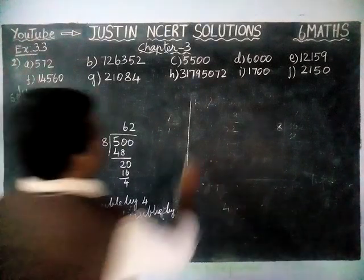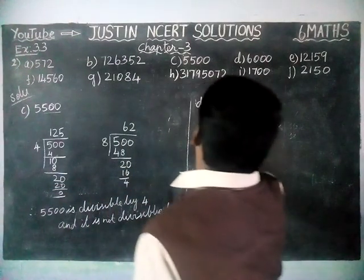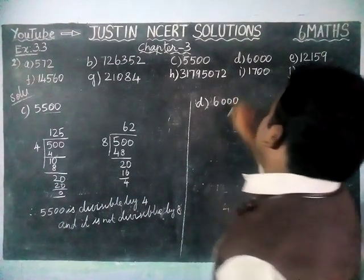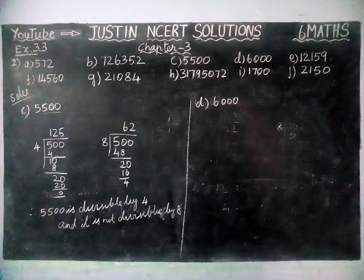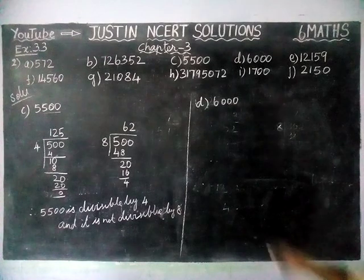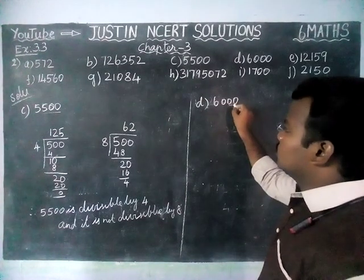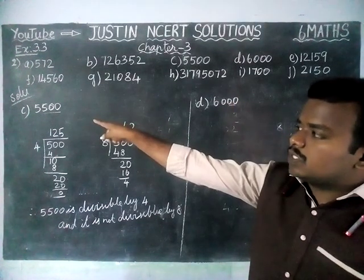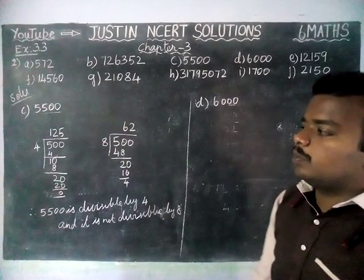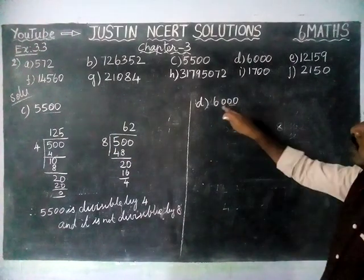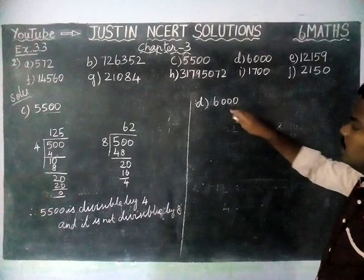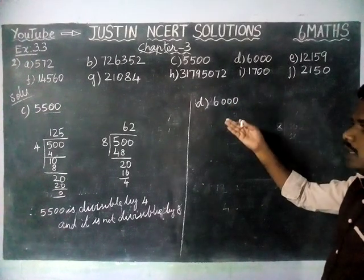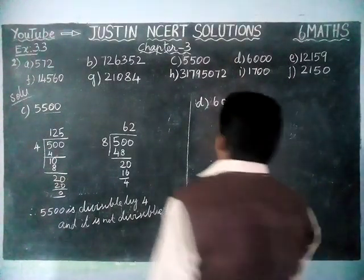Next, option D: 6,000. Here the last 2 digits are 0, so the number is divisible by 4. Also, the last 3 digits are 0. If the last 3 digits are 0, that number is divisible by 8 also. We will see the proof.